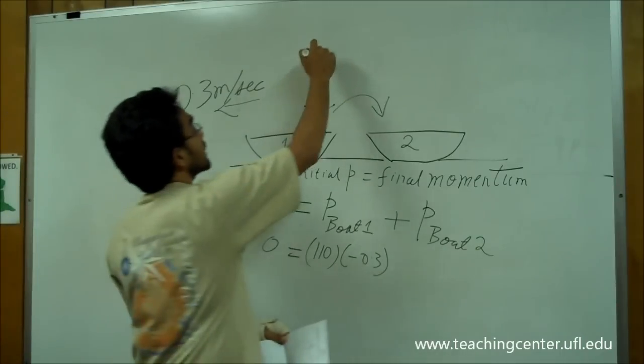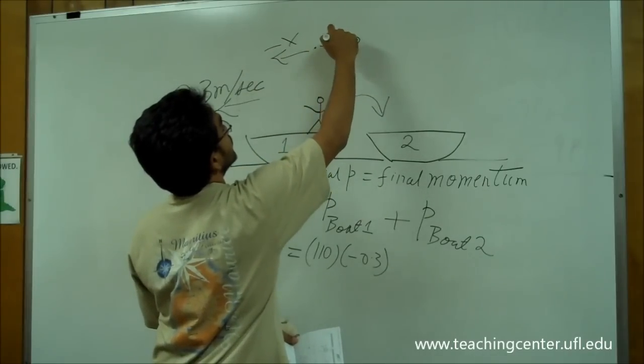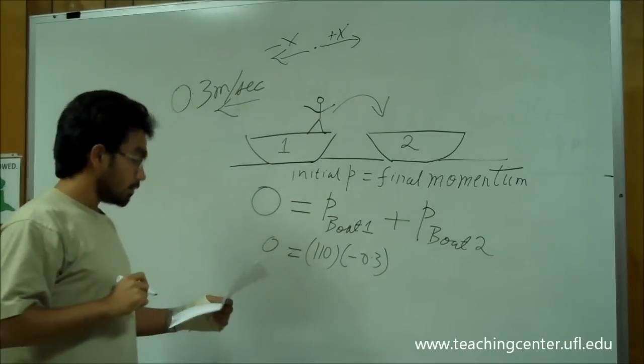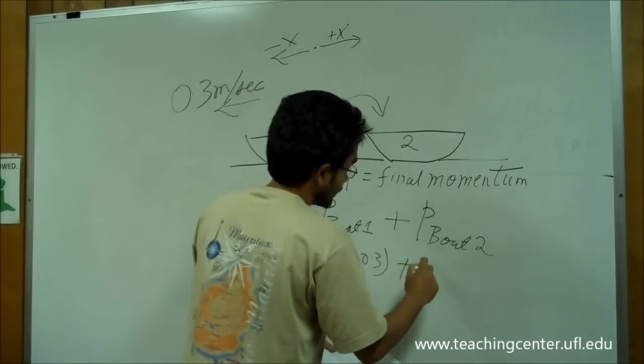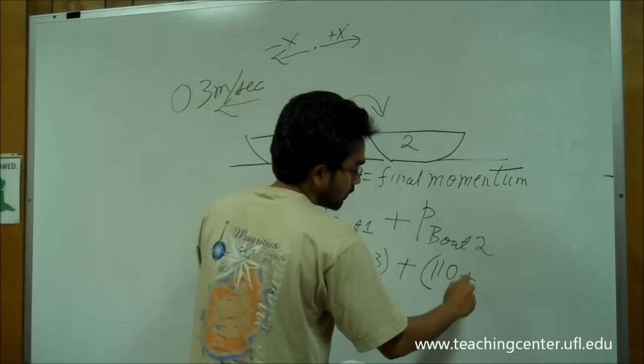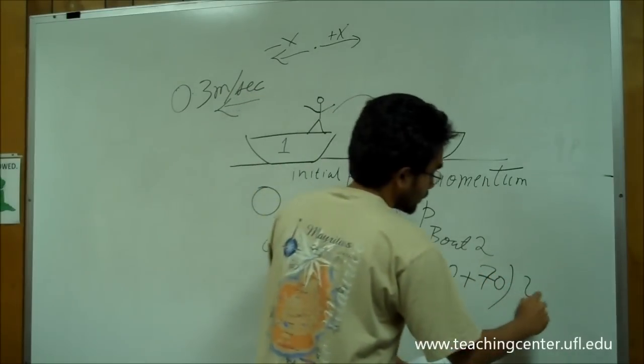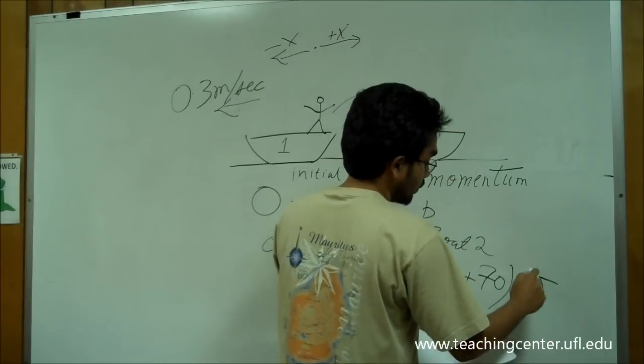Now, note this is negative x, this is positive x, right? Plus, mass of the boat, plus mass of the man, times the speed of the boat, which is what the unknown is here.